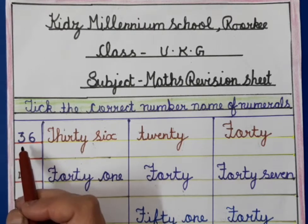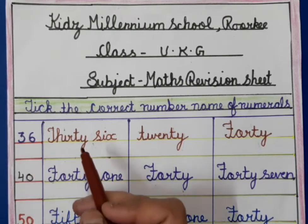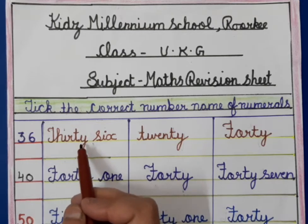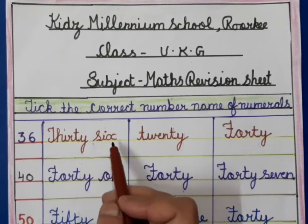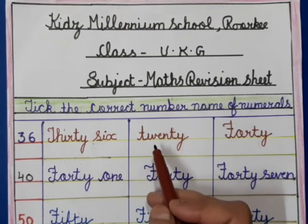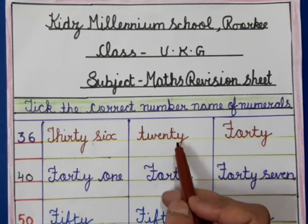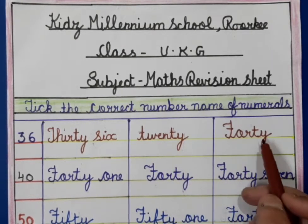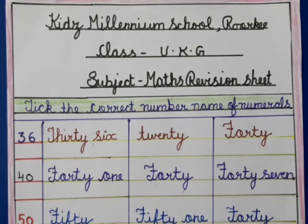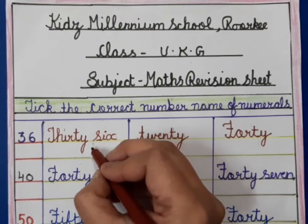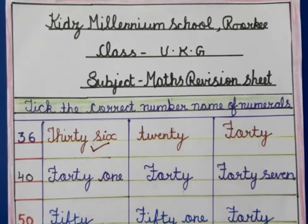This is 36. The options are: THIRTY-SIX (36), TWENTY (20), and FORTY (40). So, this is 36 — THIRTY-SIX is the correct answer and we will tick it like this.